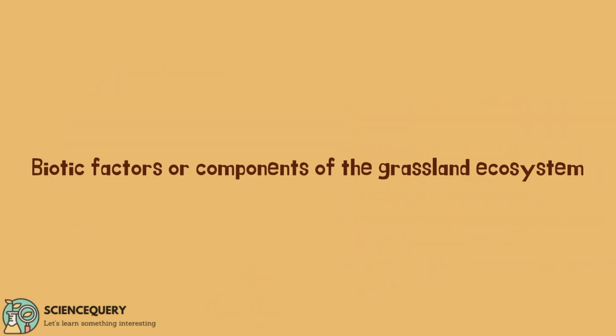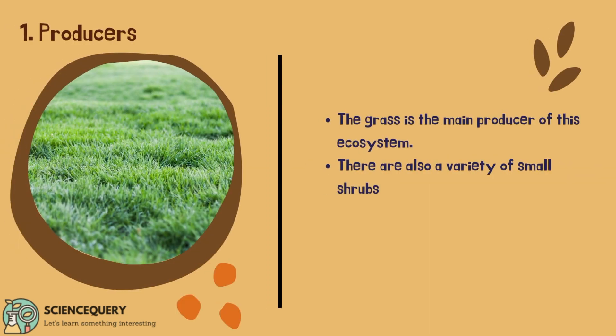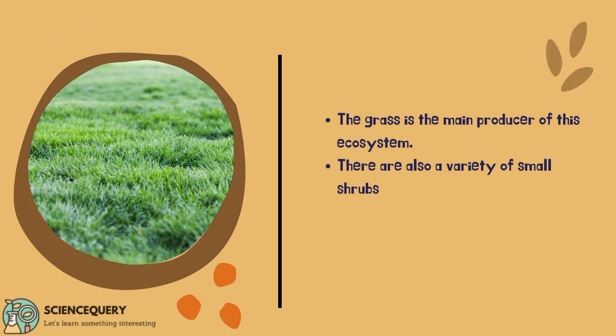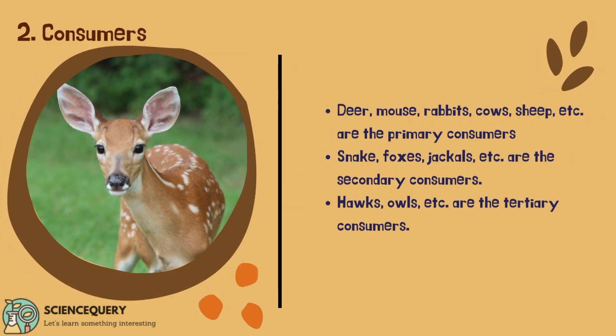Now let us see what are the biotic factors or components of the grassland ecosystem. The first biotic factor is the producers — grasses are the main producer of this ecosystem, and there are also a variety of small shrubs. The second biotic factor is the consumers. Deer, mouse, rabbit, cows, sheep, etc. are the primary consumers.